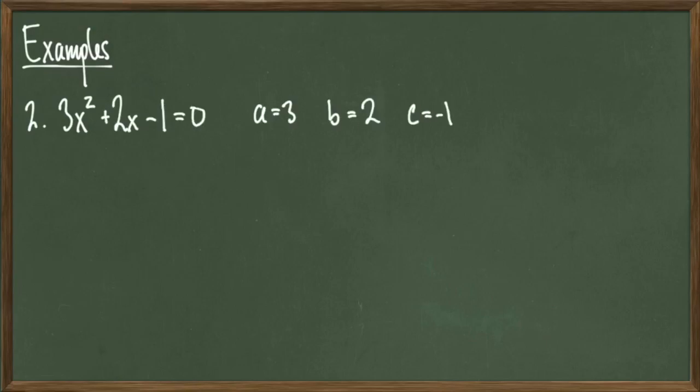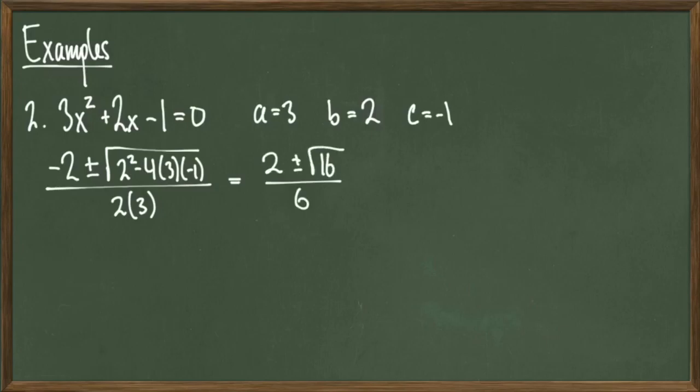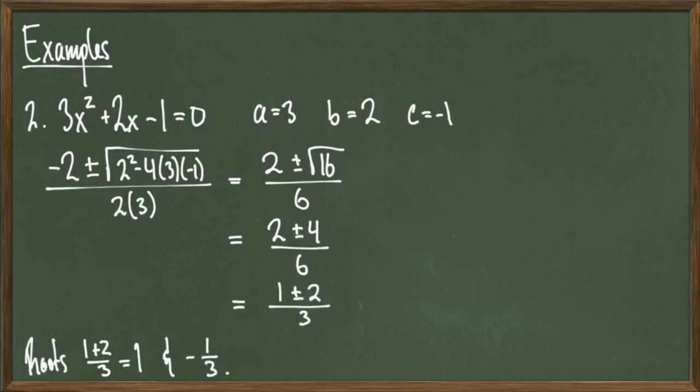In our next example, consider the quadratic equation 3x squared plus 2x minus 1 equals 0. We identify a equals 3, b equals 2, and c equals negative 1. We can start plugging into the formula. This gives us minus 2 plus minus the square root of 2 squared minus 4 times 3 times negative 1 over 2 times 3, which after some arithmetic simplifies down to minus 2 plus minus the square root of 16 over 6. And since the square root of 16 equals 4, we get minus 2 plus minus 4 over 6, simplifying down to minus 2 plus minus 2 over 3 after we cancel. Once all is said and done, we have that our roots are equal to 1 third and minus 1.